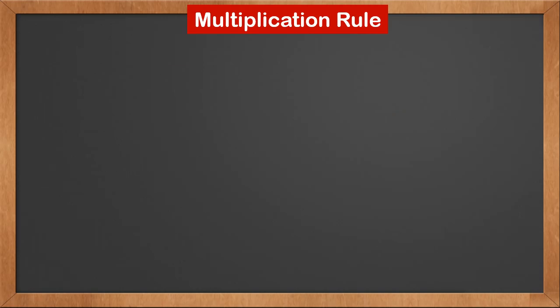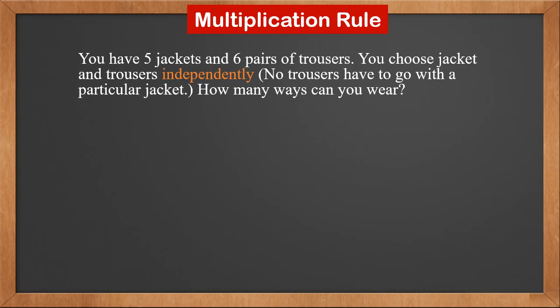In order to calculate permutation, we also need to know the multiplication rule. Suppose you have five jackets and six pairs of trousers. You choose jacket and trousers independently, meaning no trousers have to go with a particular jacket. You can match jacket and trousers freely.